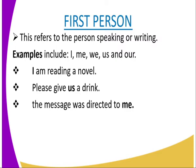Words used with the first person pronoun include: I, me, we, us, our, and ours. 'I' and 'me' are singular forms; 'we,' 'us,' 'our,' and 'ours' are plural forms. For example: 'I am reading a novel' — 'I' is first person singular. 'Please give us a drink' — 'us' is first person plural. 'The message was directed to me' — 'me' is first person singular.